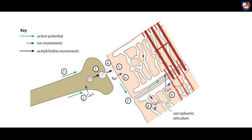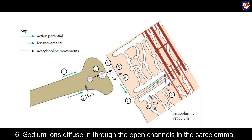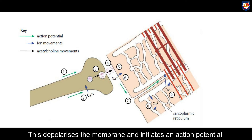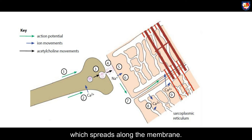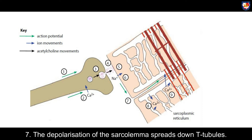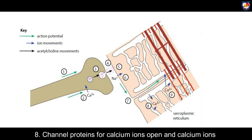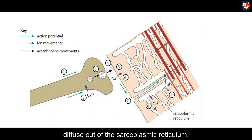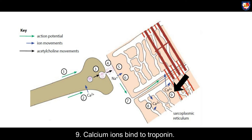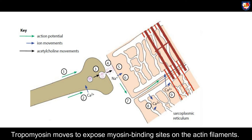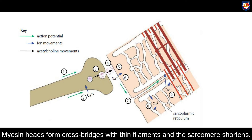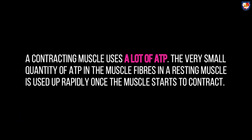Fifth, acetylcholine molecules bind with receptors in the sarcolemma, causing them to open channel proteins for sodium ions. Sixth, sodium ions diffuse into the open channels in the sarcolemma; these depolarize the membrane and initiate an action potential which spreads along the membrane. Seventh, the depolarization of the sarcolemma spreads down the T-tubules. Eighth, channel proteins for calcium ions open and calcium ions diffuse out of the sarcoplasmic reticulum. Ninth, calcium ions bind to troponin; tropomyosin moves to expose myosin binding sites on the actin filaments; myosin heads form cross bridges with thin filaments and the sarcomere shortens.